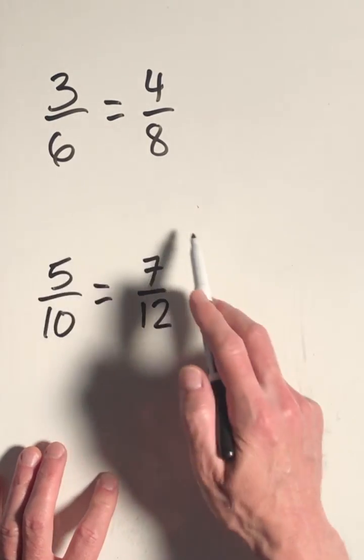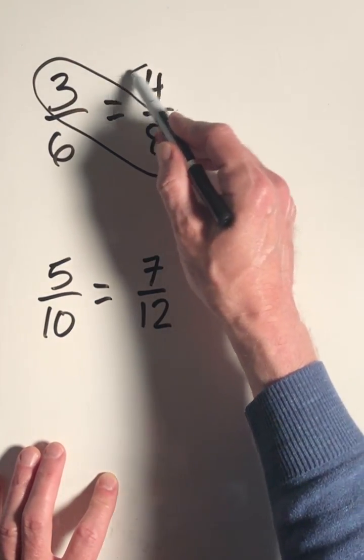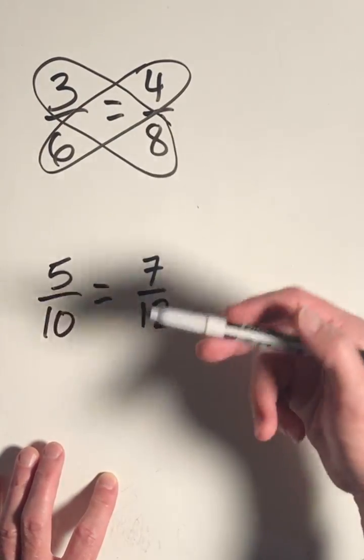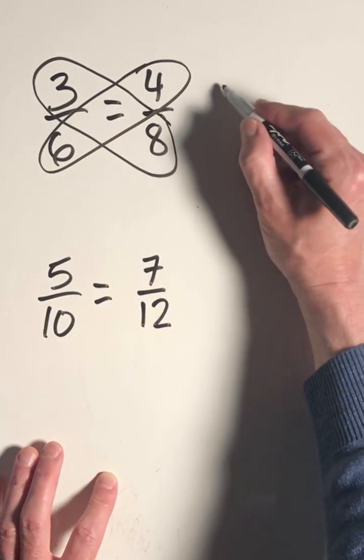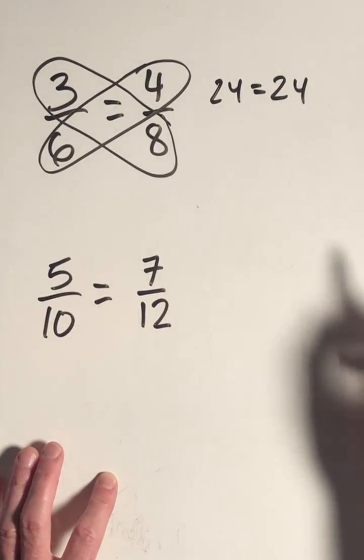If we look at the structure here, we can take 8 times 3, and it should equal 6 times 4. If this is true, then these two ratios are in proportion. So 3 times 8 is 24. 6 times 4 is also equal to 24.